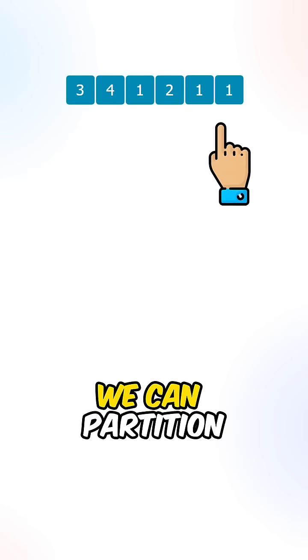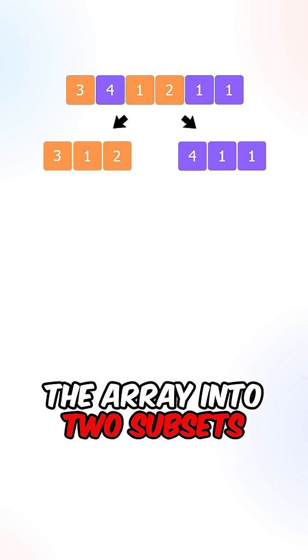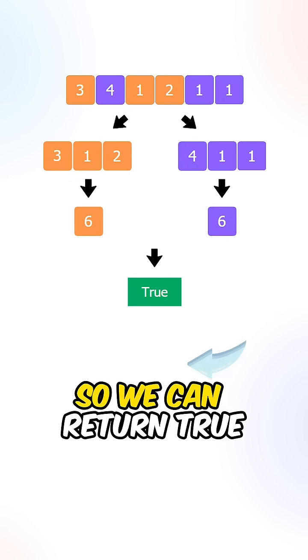Let's say we're given this array, we can partition the array into two subsets where the sums are both 6, so we can return true.